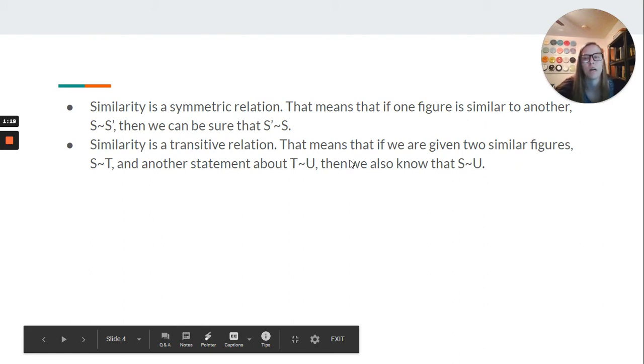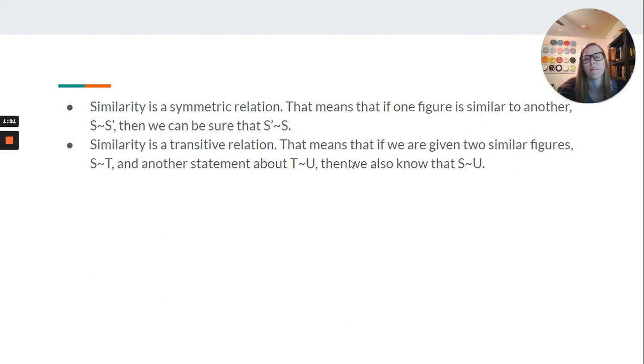So a couple of basic properties. Similarity is a symmetric relation. That means that if one figure is similar to another, such as S to T, then we can be sure that it works backwards.